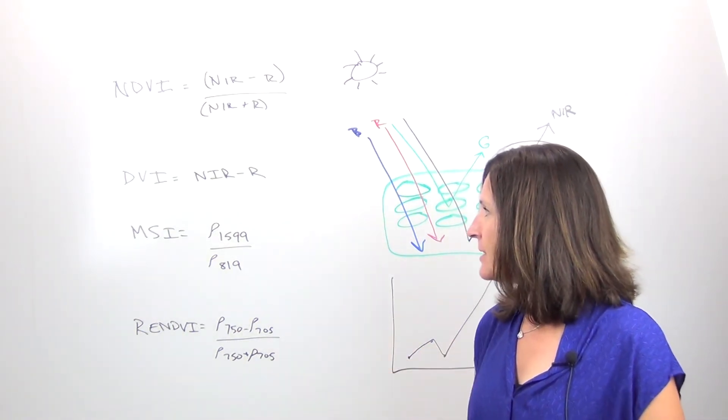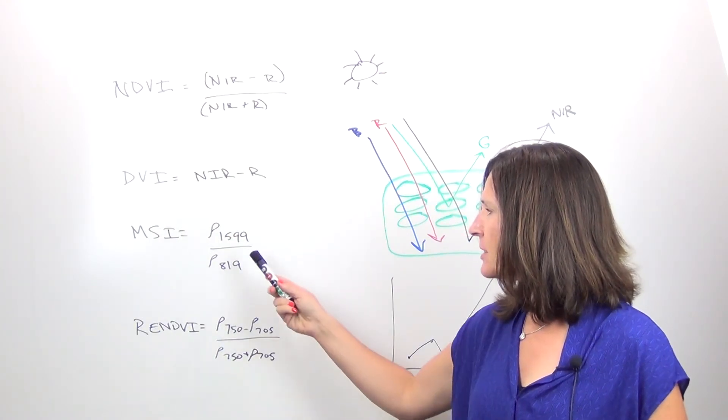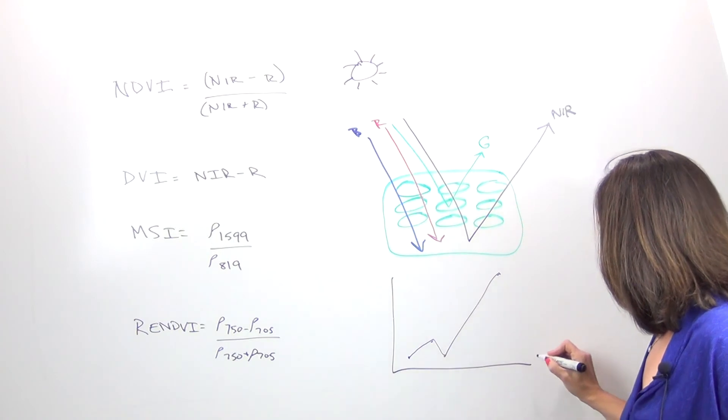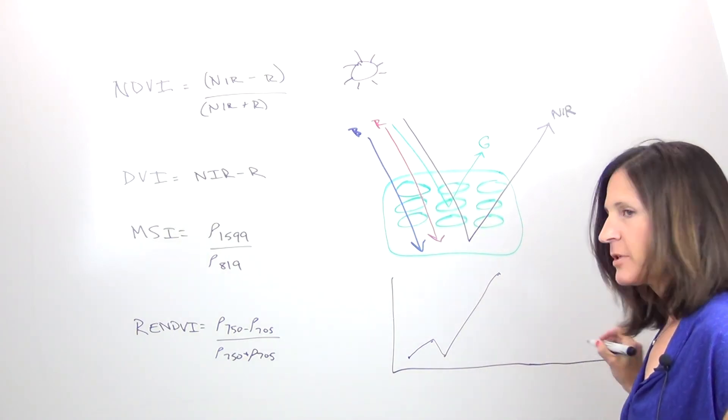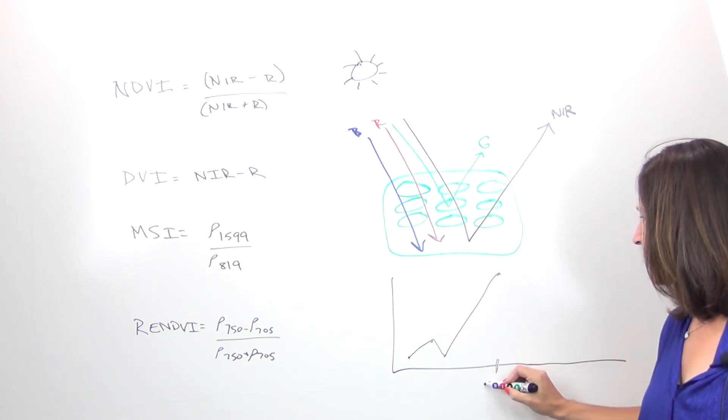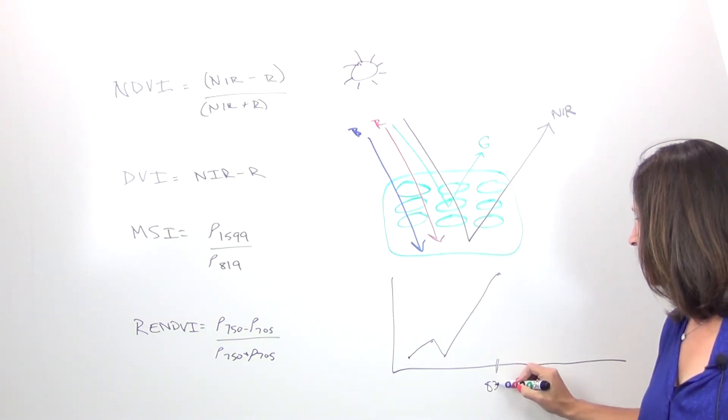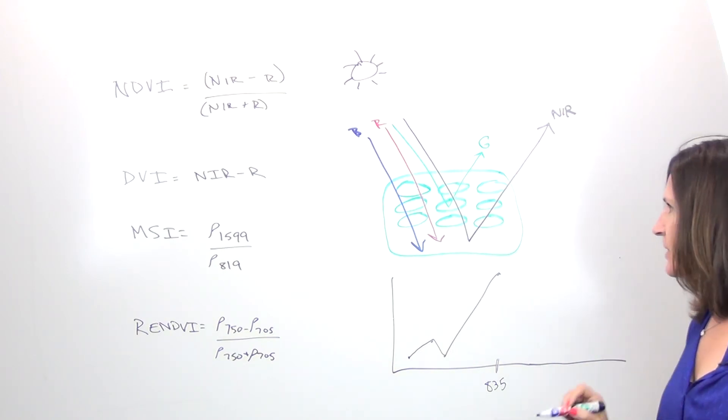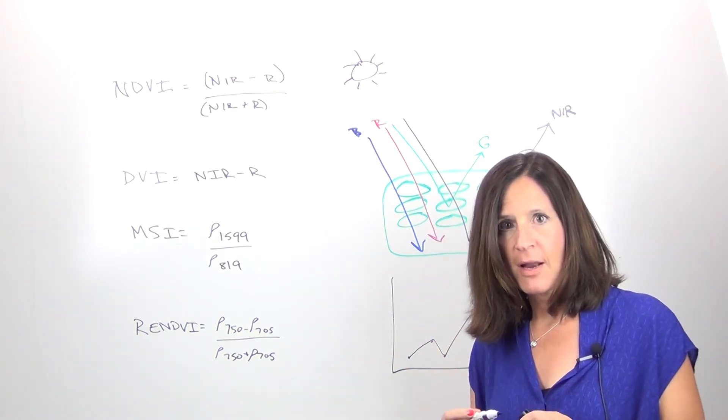The MSI index is going to use information way out here in the wavelengths from your sensor. So if your sensor is going beyond the near infrared wavelengths about 830 to 850 nanometers, but way out here to 1500, this is a moisture stress indicator index.